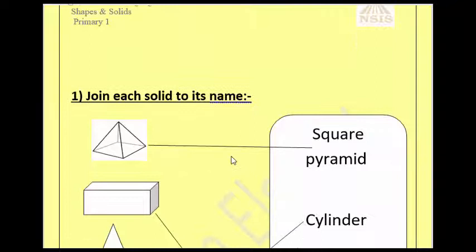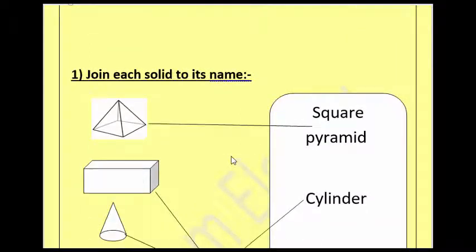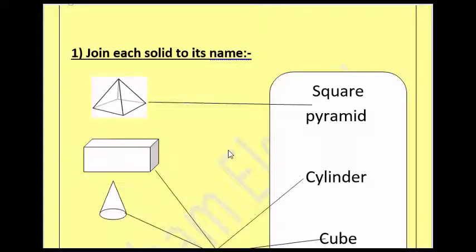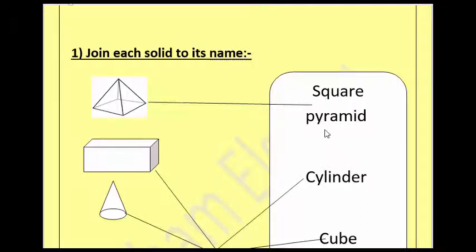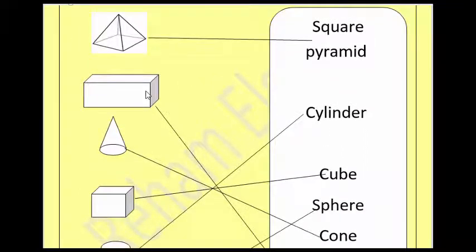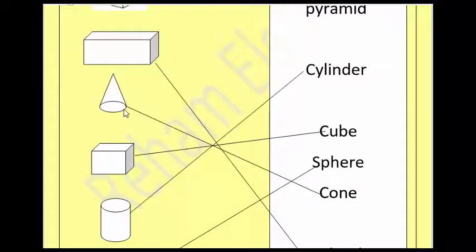Please download our sheet for solids from our website. First exercise: join each solid to its name. What is this? This is a square-based pyramid, so match it to square-based pyramid. What is this? This is a cuboid, so match it to cuboid. What is this? This is a cone, so match it to cone. And this one: cube matches to cube. And this is cylinder.